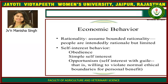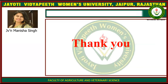Economic behavior: first is rationality — assume bounded rationality, meaning people are intendedly rational but limited. Second is self-interest behavior, which ranges from obedience to simple self-interest to opportunism — that is, self-interest with guile — meaning a willingness to violate normal ethical boundaries for personal benefit.